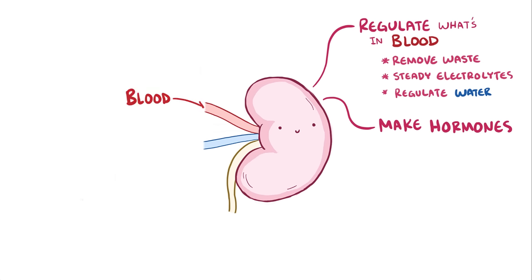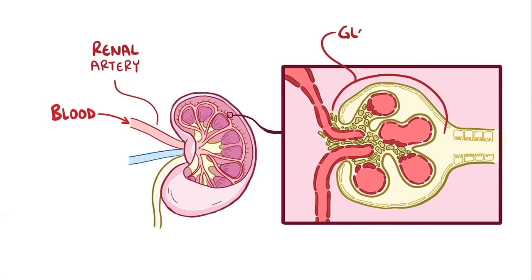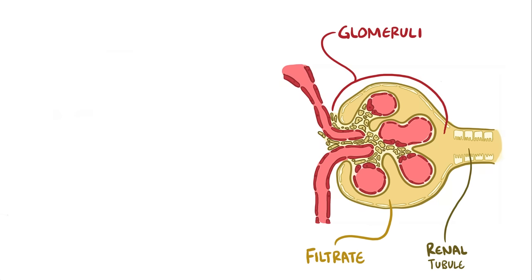Blood gets into the kidney through the renal artery, and once inside it goes to tiny clumps of arterioles called glomeruli, where it's initially filtered. And the filtrate, which is the stuff that gets filtered out, moves into the renal tubule. The rate at which this filtration process takes place is known as the glomerular filtration rate, or GFR.